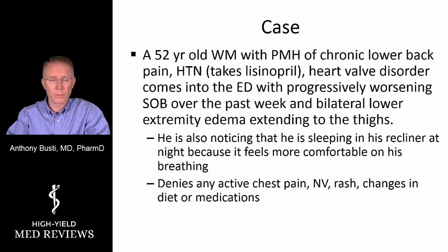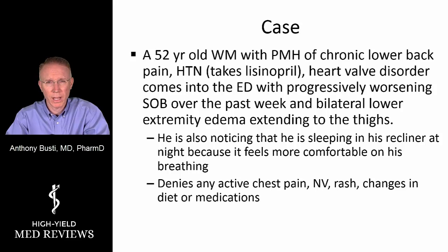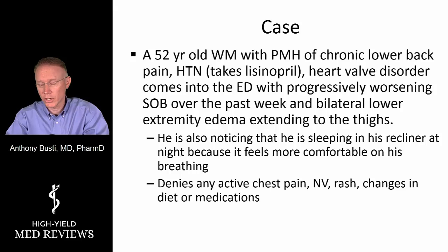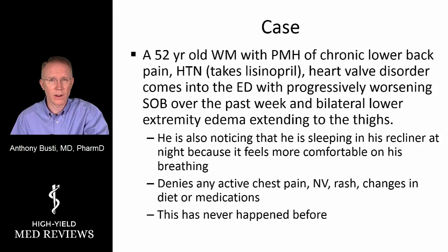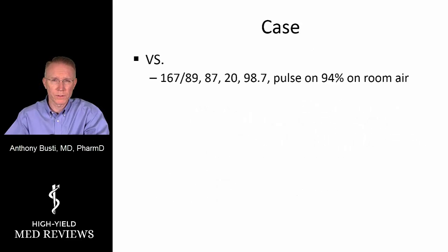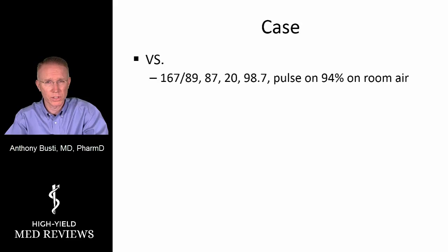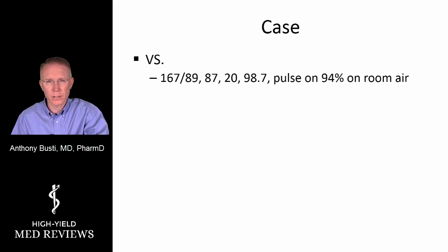On review of systems, he denies chest pain, chest tightness, nausea, vomiting, rash, recent travel, and no changes in diet or medications. This has never happened before. Vital signs show he's a little hypertensive, consistent with his history. Pulse is okay, respirations about 20, afebrile, and pulse ox on room air is approximately 94%.